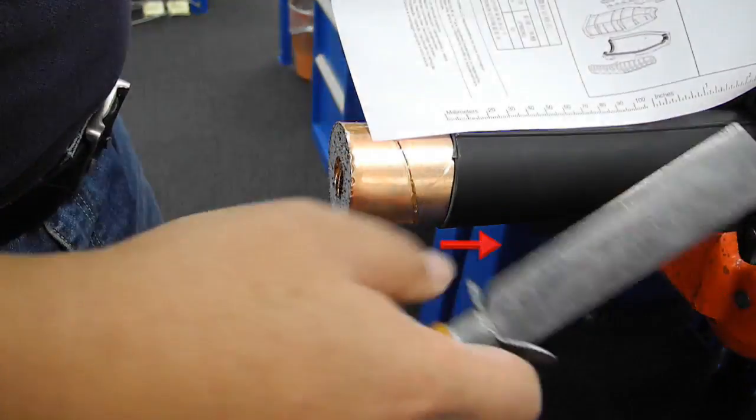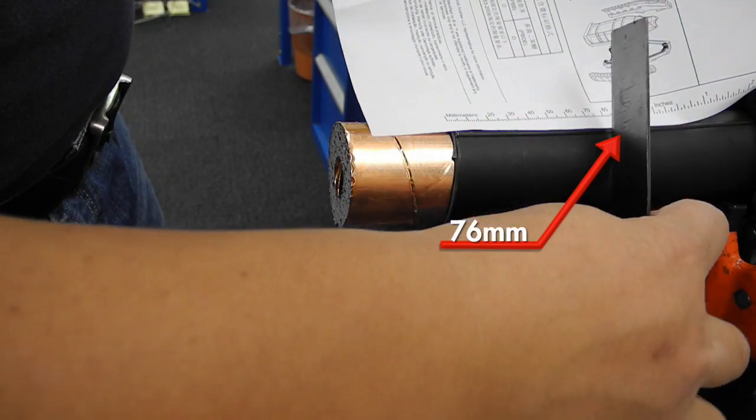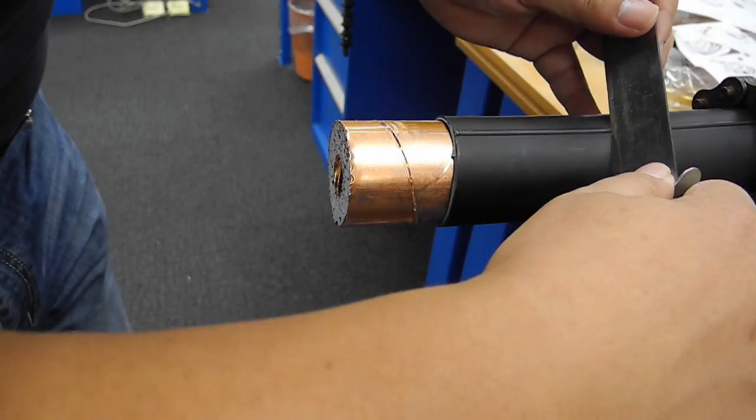Next, measure back 76mm along the ridge and trim the ridge flush with the jacket.